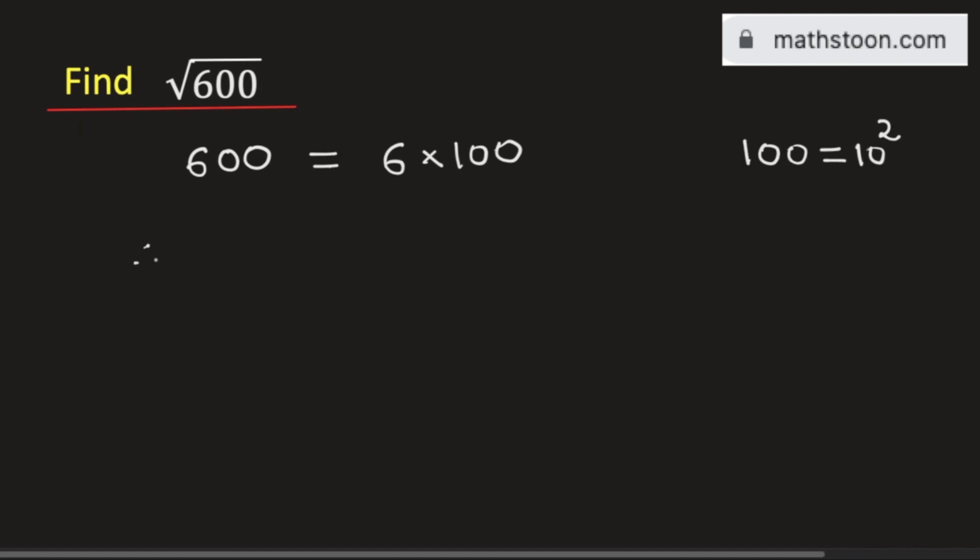Now taking square root on both sides, we will get square root of 600 is equal to square root of 6 times 100.